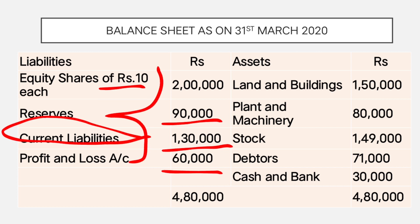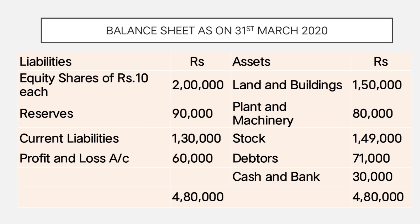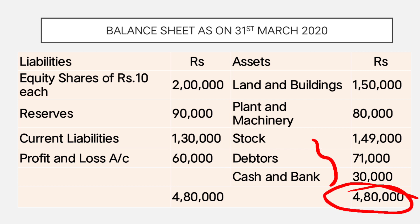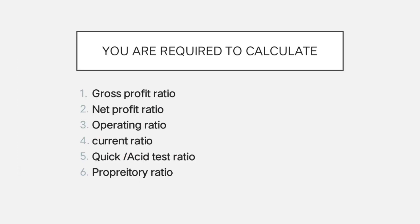On the assets side: land and building, plant and machinery are fixed assets. Current assets include stock, debtors, and cash. The total tangible assets are 4,80,000. No intangible assets are given, so we use 4,80,000 as total tangible assets.